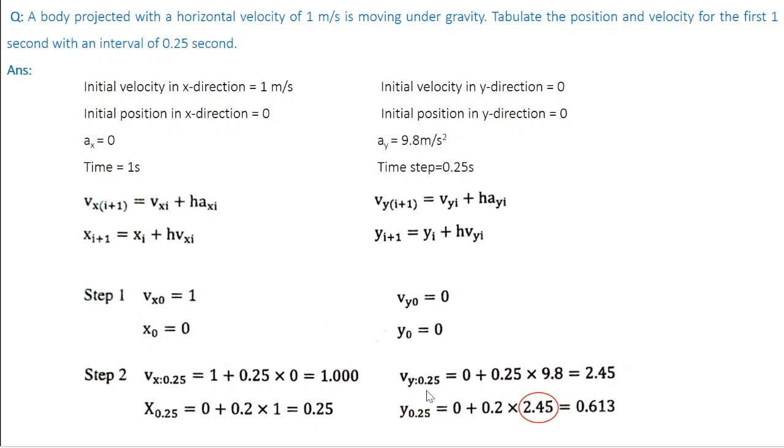v_y of 0.25 equal to v_y of 0 which is 0 plus step size into a_y_0 which is 9.8. So we will evaluate 2.45 and y of 0.25 equal to y of 0 which is 0 plus step size. Once again, there is a typo here. This is 0.25 multiplied by v_y_0 which is 0 here. So this is 0 plus 0, 0.